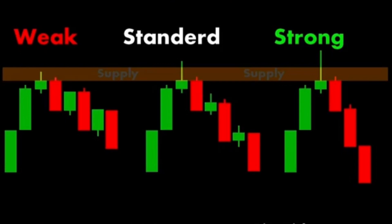Two: volume. High trading volume at the supply zone reinforces its strength. It indicates substantial selling pressure from large market participants such as institutional traders. Three: number of tests. A supply zone that has been tested multiple times and still holds without being significantly penetrated is often seen as strong. Repeated tests show that sellers consistently step in at that level.